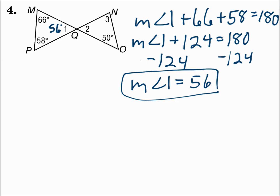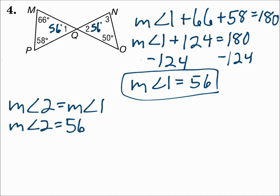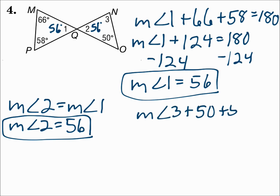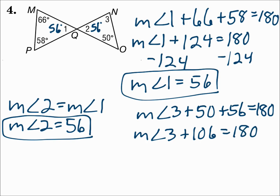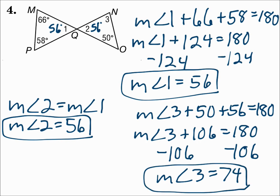Now let's move into the right-hand triangle. Angle one and angle two are vertical angles, so they have the same measure — angle two is also 56 degrees. Now on the right-hand triangle, you know two of the angles. The measure of angle three plus 50 plus 56 equals 180. 50 plus 56 is 106. Subtract 106 from each side to get 74. Remember, vertical angles are congruent.